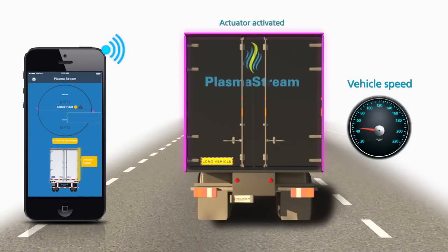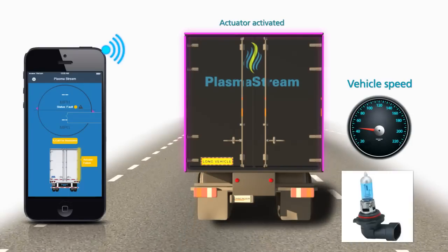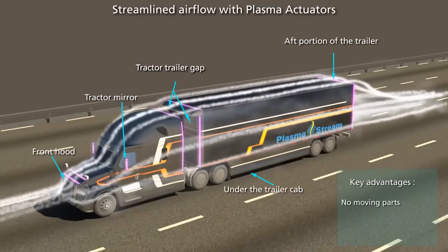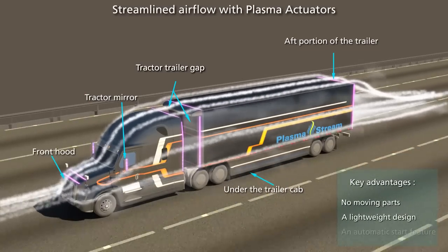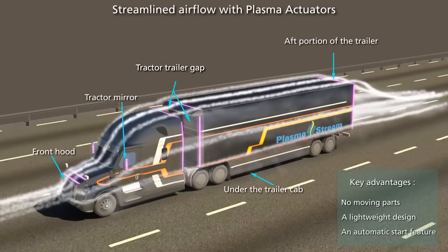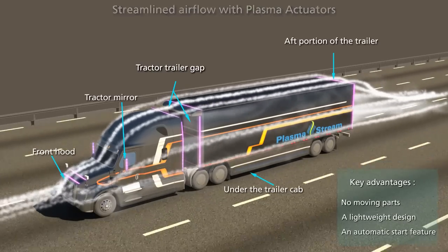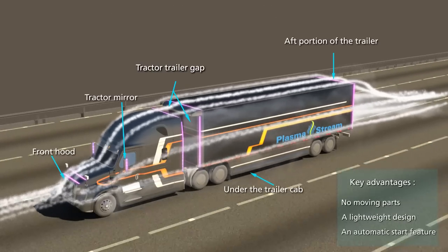The system will automatically notify the driver in the event of failure and will also provide the necessary troubleshooting instructions. The entire system consumes less power than a single headlamp bulb. Key advantages include having no moving parts, a lightweight design, and an automatic start feature. These advantages address many of the inadequacies of current passive air deflection devices which limit performance and convenience.